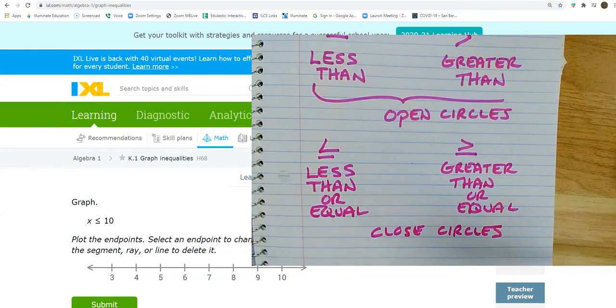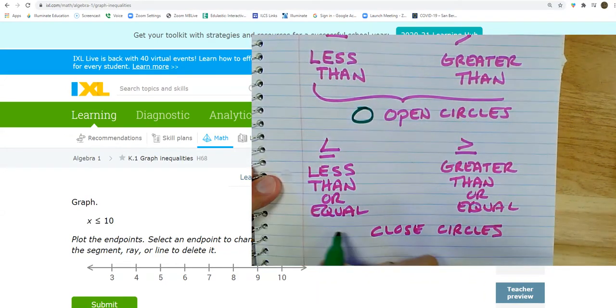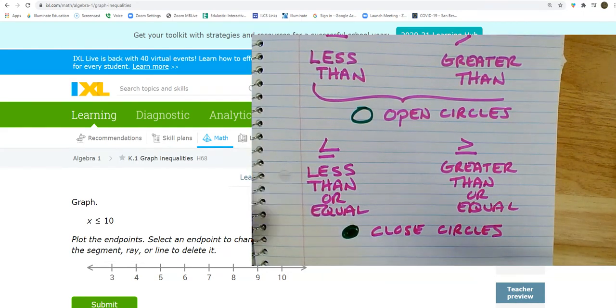And so, what do I mean by open and closed circles? When we're going to be graphing these, an open circle looks like this, and a closed circle looks like that. Okay? So, let's do some of these problems.